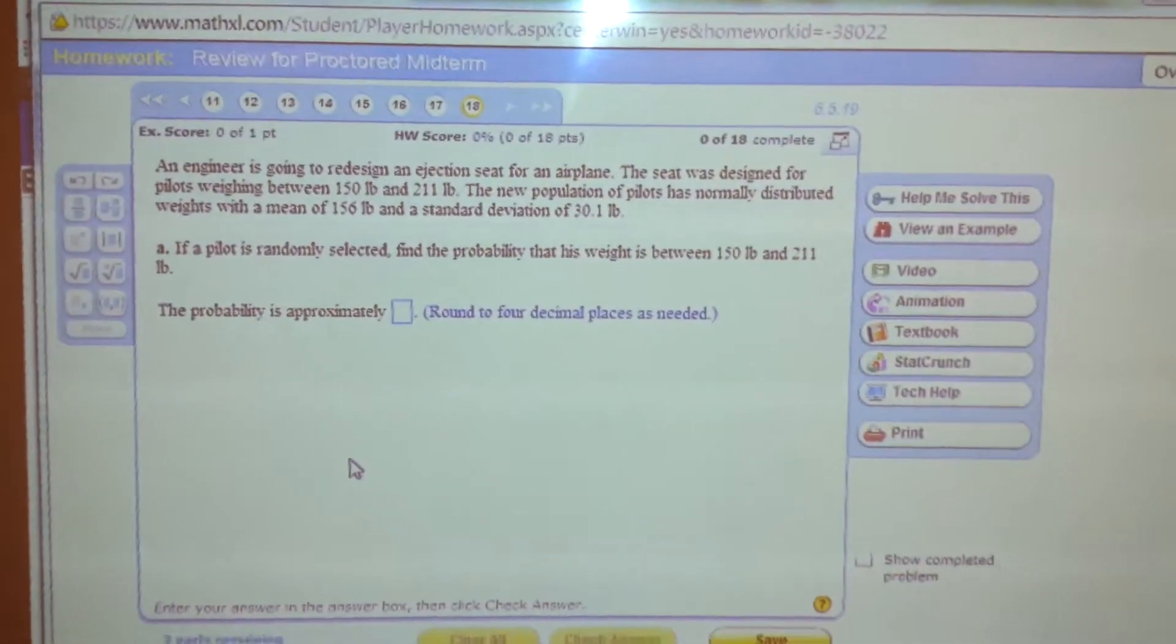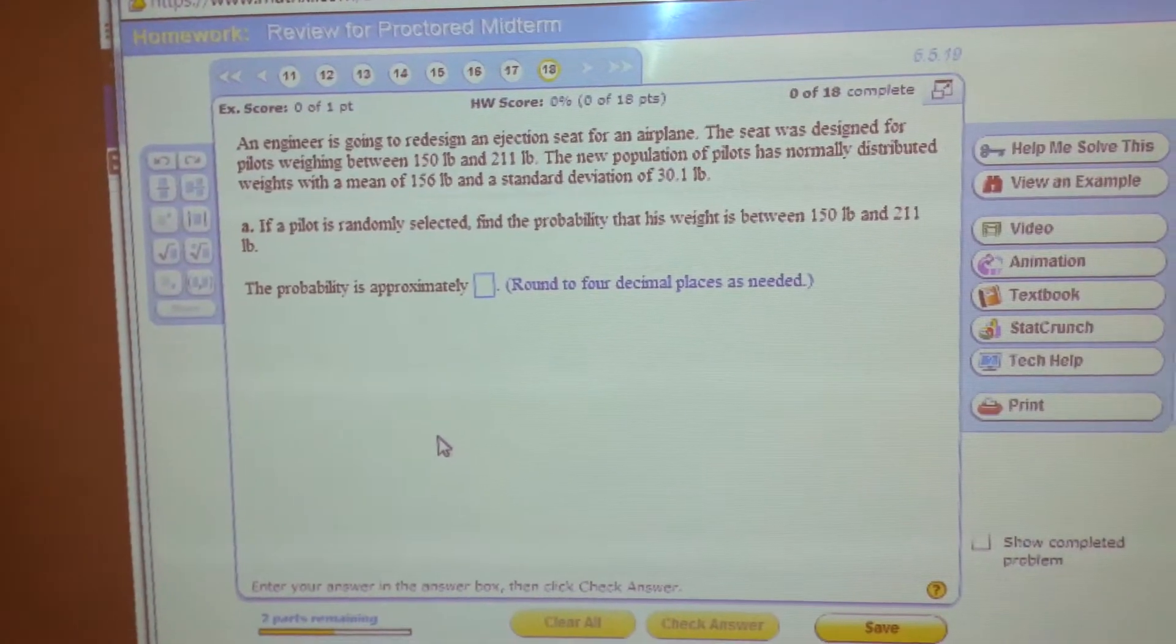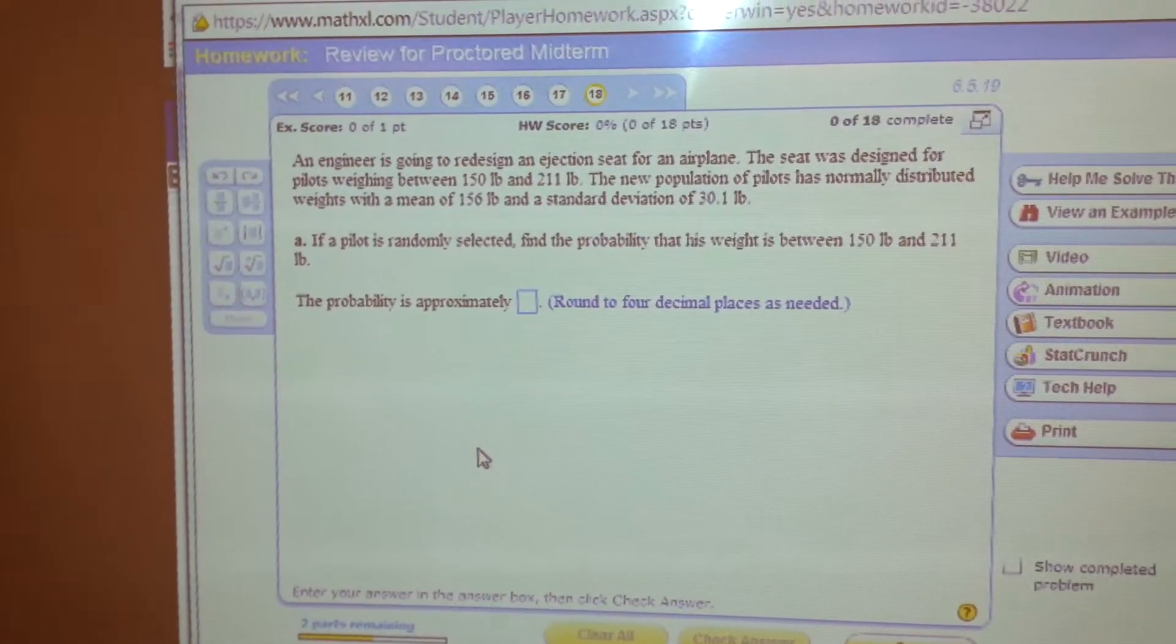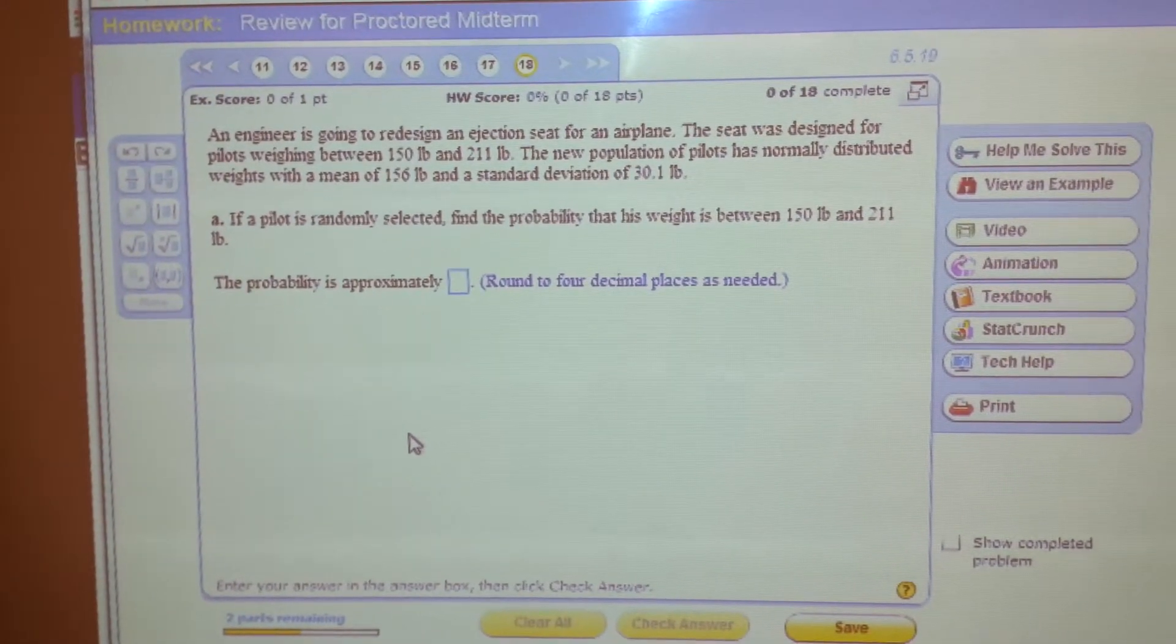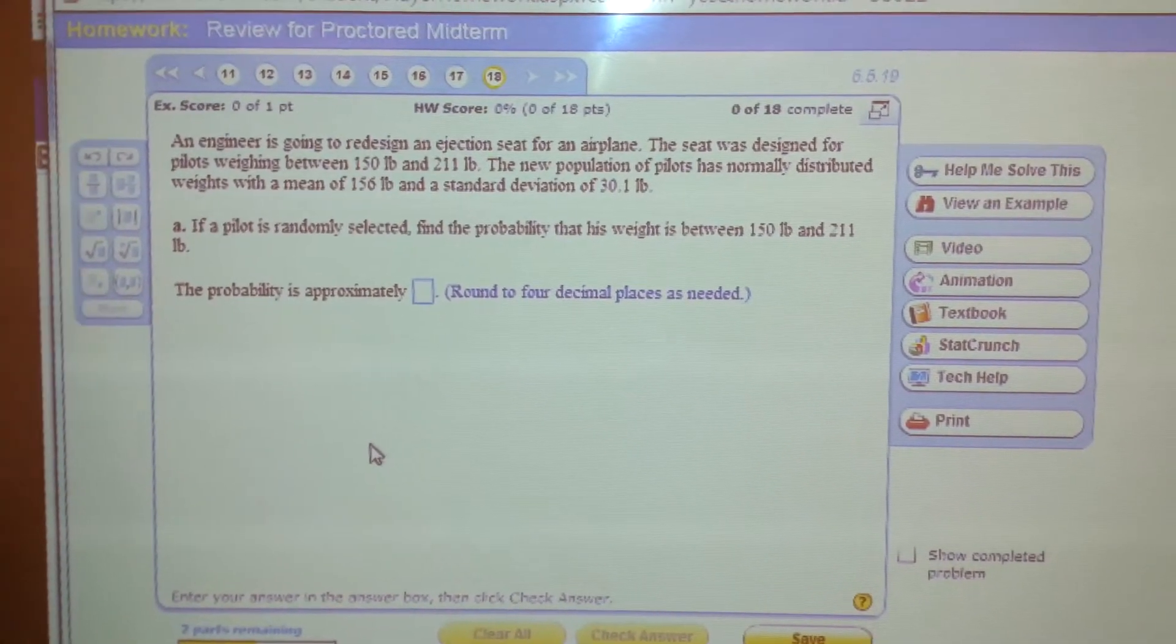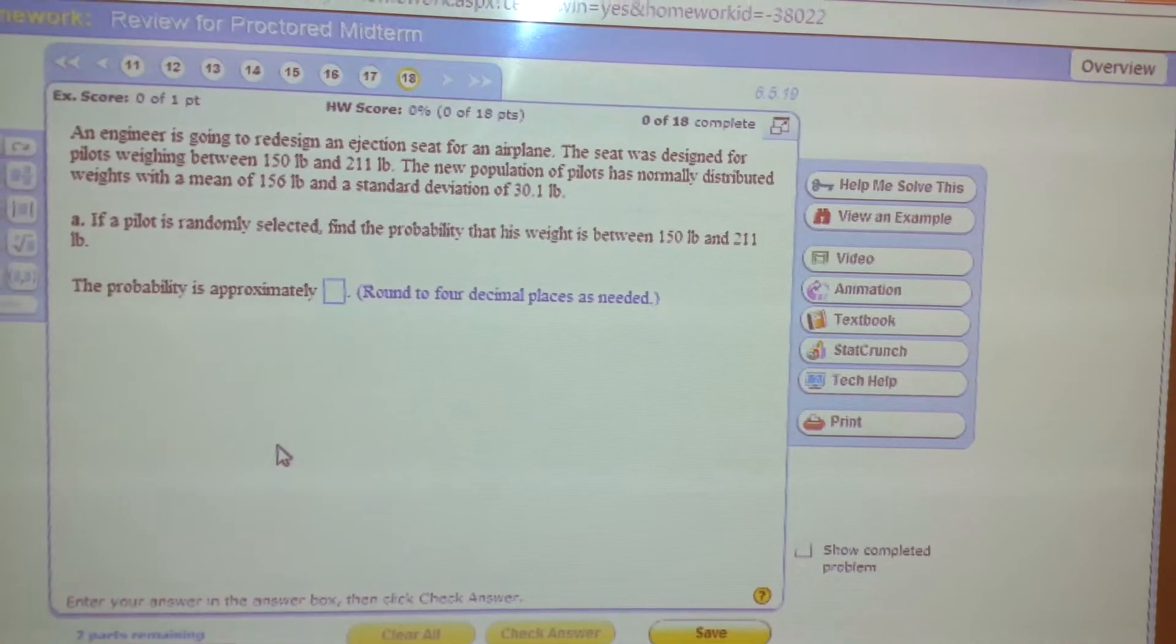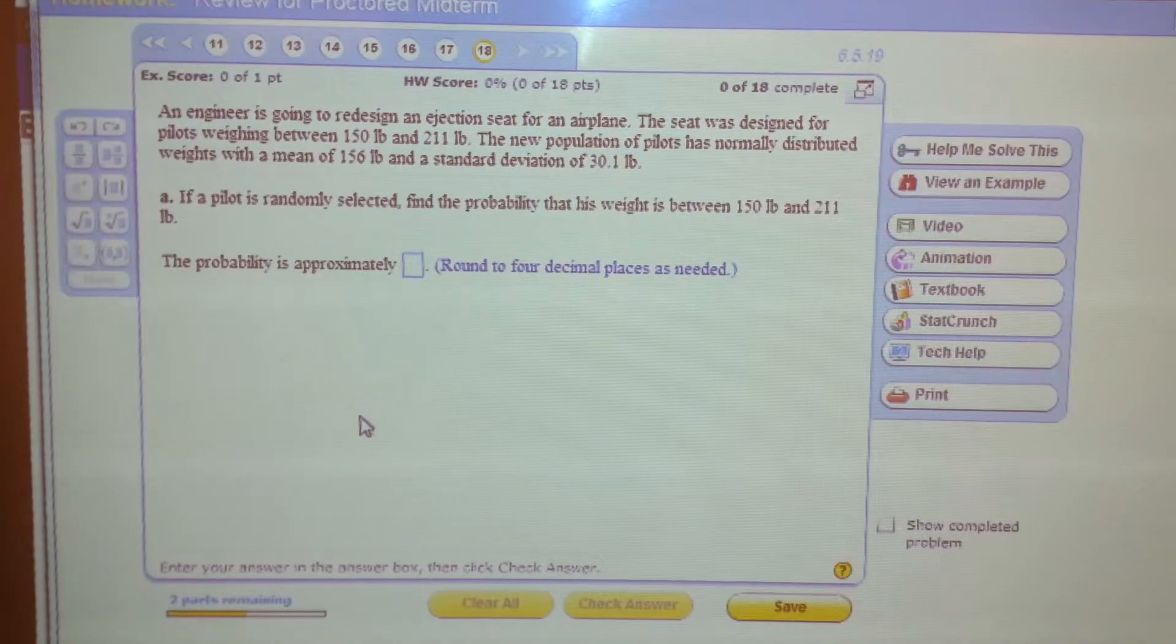An engineer is going to redesign an ejection seat for an airplane. The seat was designed for pilots weighing between 150 pounds and 211 pounds. The new population of pilots has normally distributed weights with a mean of 156 pounds and a standard deviation of 30.1 pounds. A pilot is selected randomly. Find the probability that his weight is between 150 and 211 pounds.